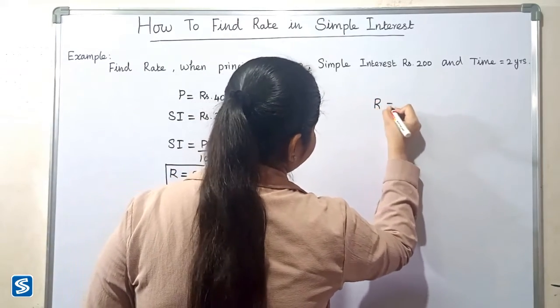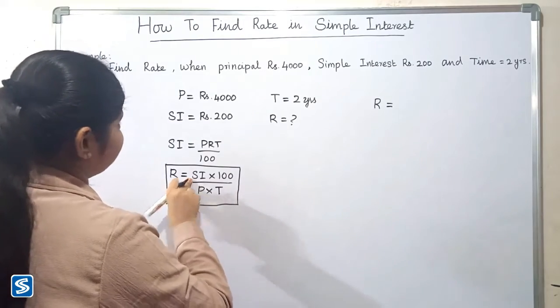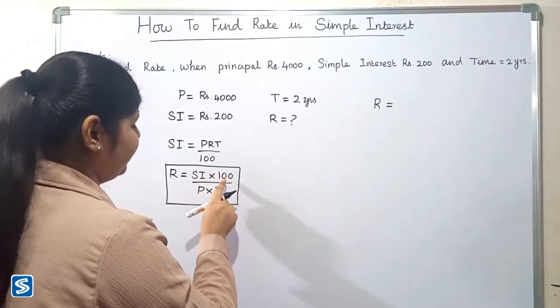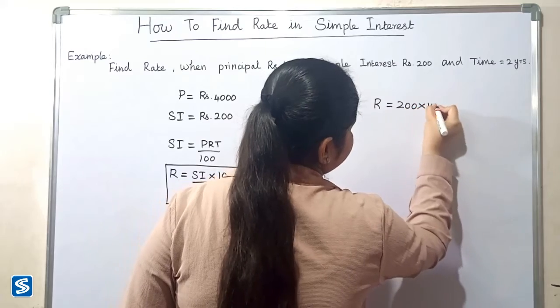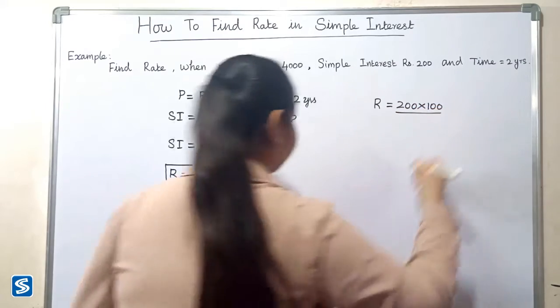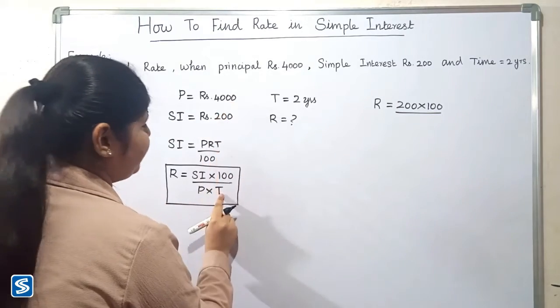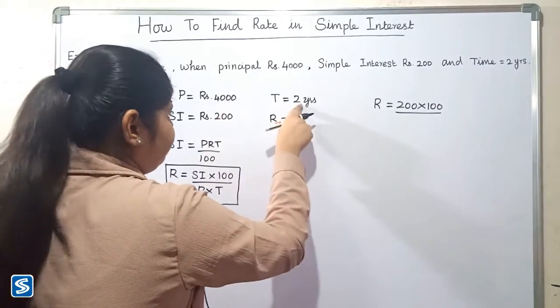is equal to, here simple interest is rupees 200, so 200 multiplied 100 divided by, here principal amount is rupees 4,000 and time period is 2 years, so 4,000 multiplied 2.